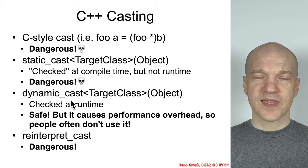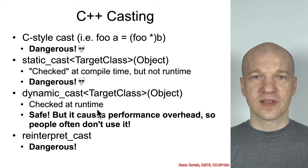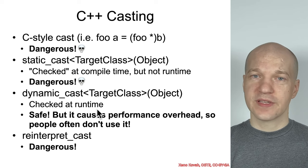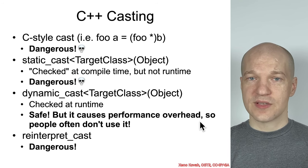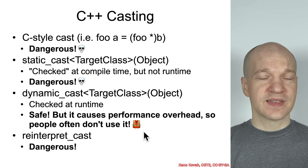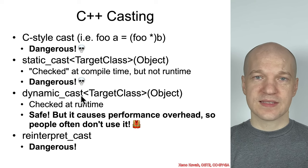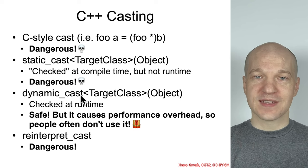Then there's dynamic cast, and that's the thing that you should actually be using. It is checked at run time rather than compile time, although there are a few checks at compile time as well. Unfortunately, a lot of people don't use dynamic cast because it has performance overhead. So this is safe, but not everybody is using it. If you take anything away from the C++ casting, the only thing is: use dynamic cast and nothing else.